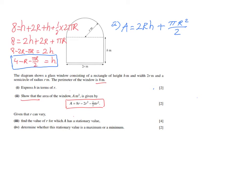However, the target formula only has r as a variable, while our expression still contains h. So we substitute the result from part (i): h = 4 − r − (πr/2). Substituting gives: A = 2r(4 − r − πr/2) + πr²/2.